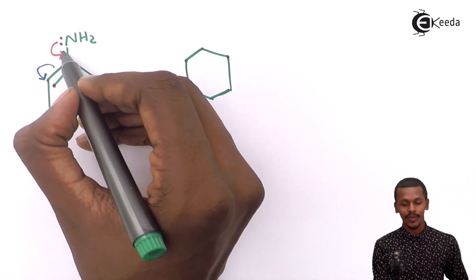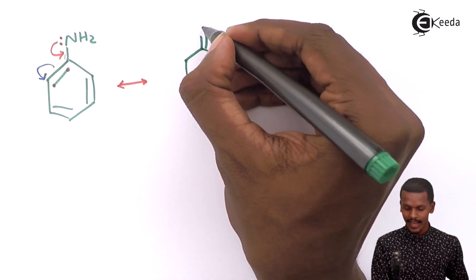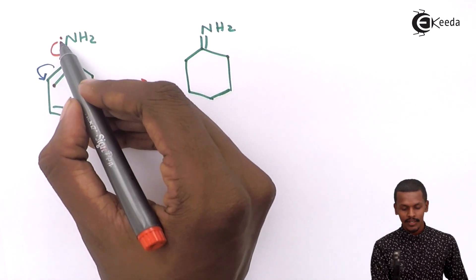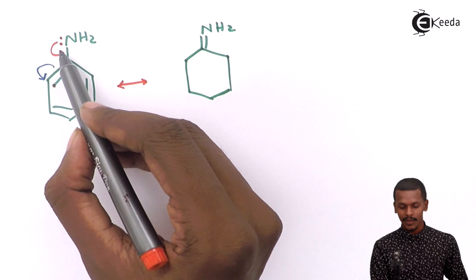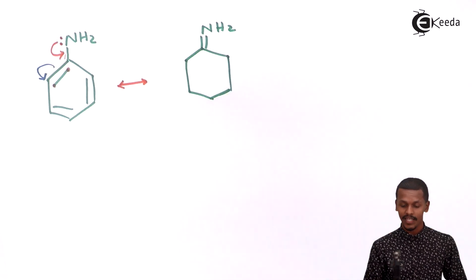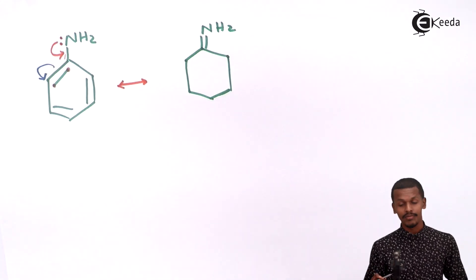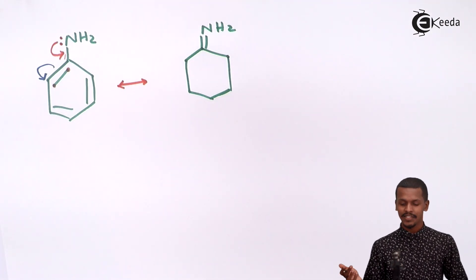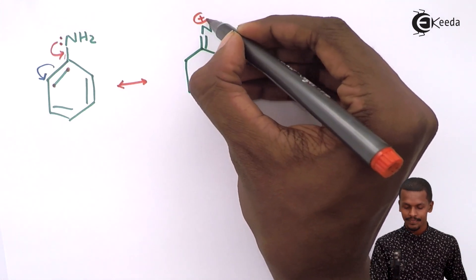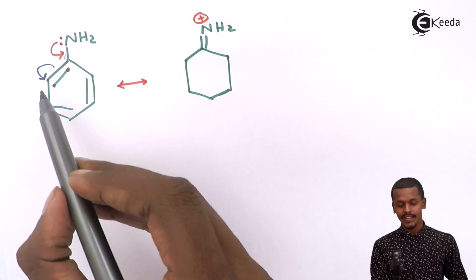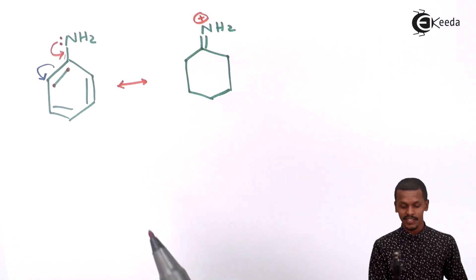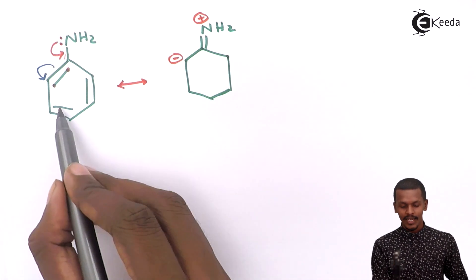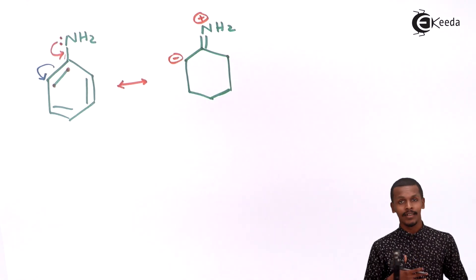As a result, we get a structure where there is formation of a double bond, so we write it as double bond NH2. Since these electrons formed a double bond and nitrogen is forming four bonds (which it doesn't usually do), nitrogen will carry a positive charge here. Meanwhile, these two electrons are shifted to a carbon atom, making that carbon atom negative.